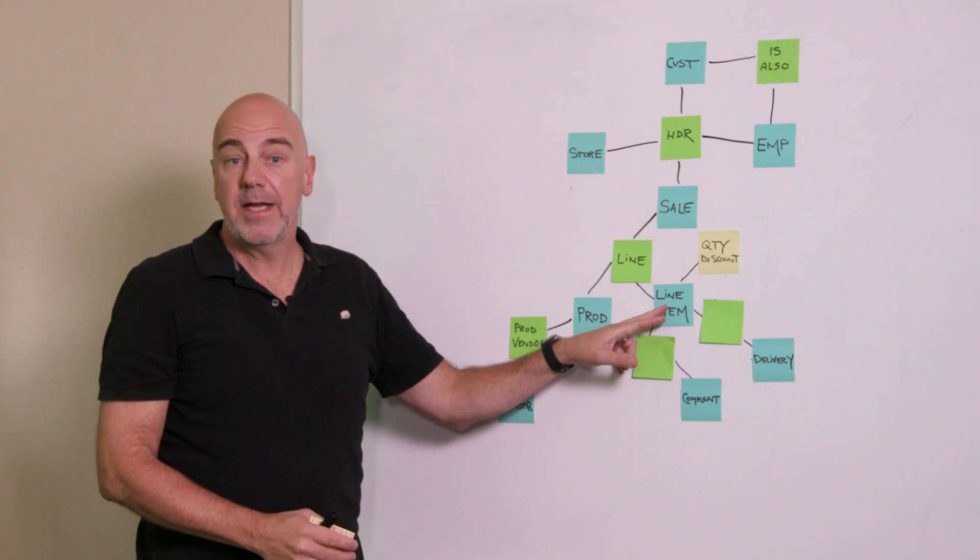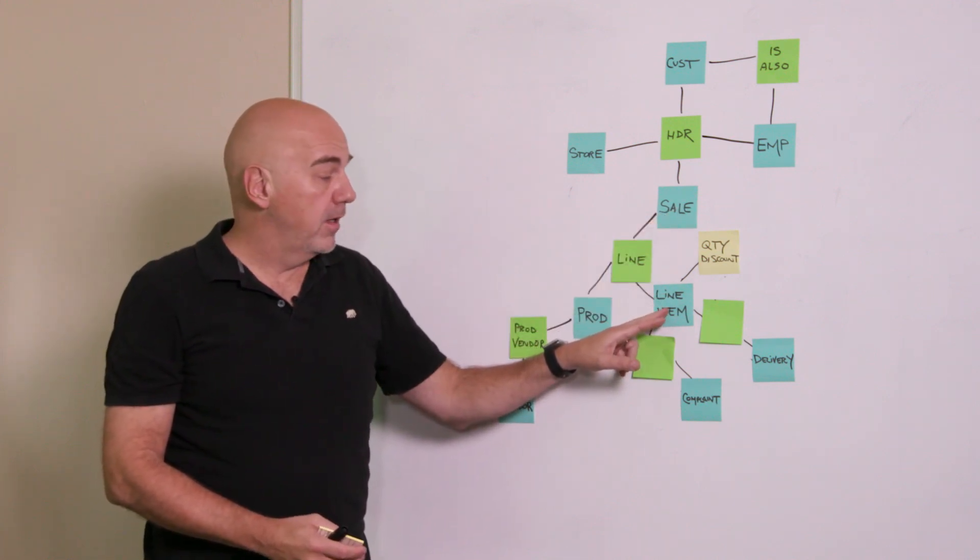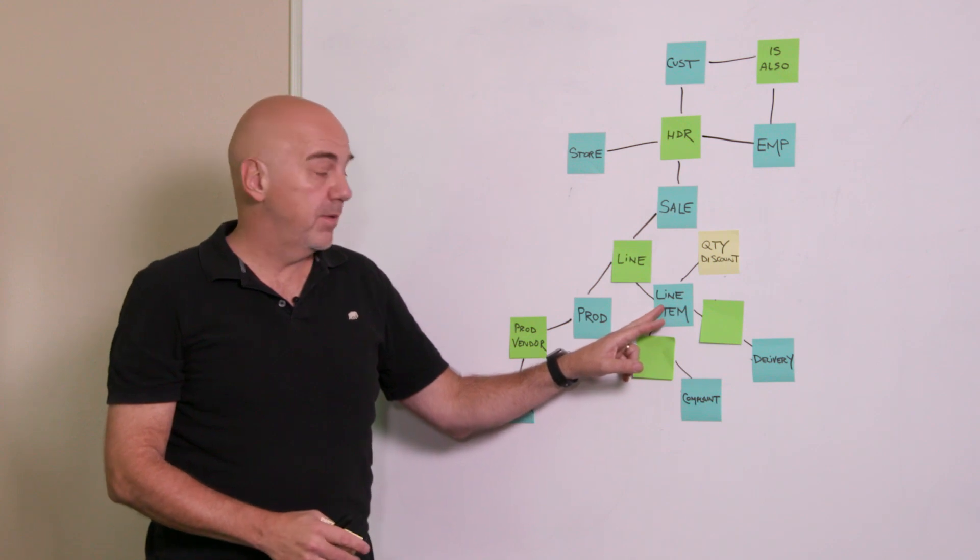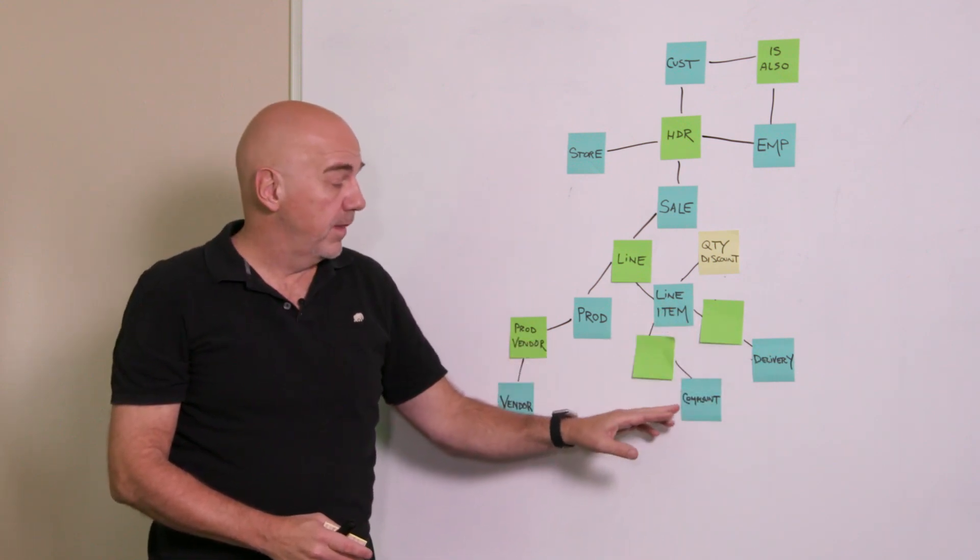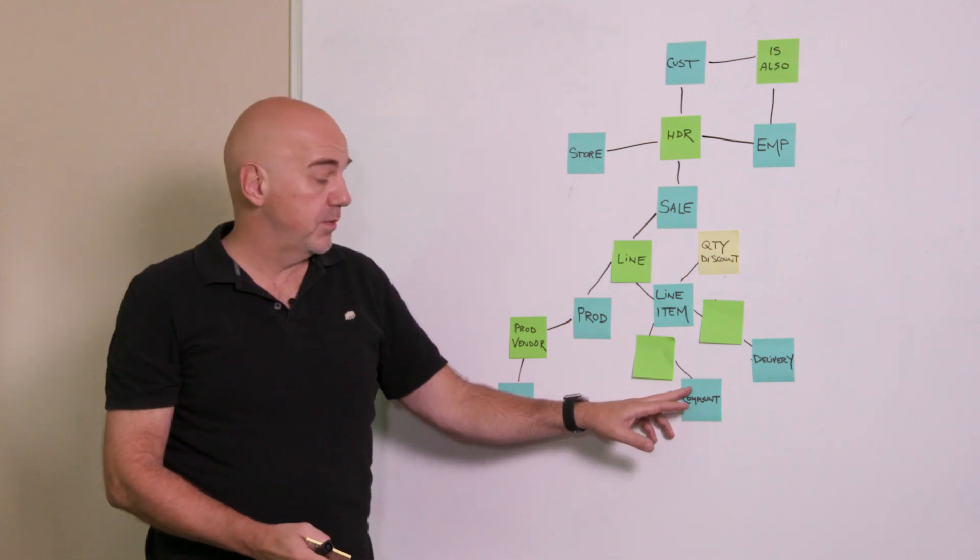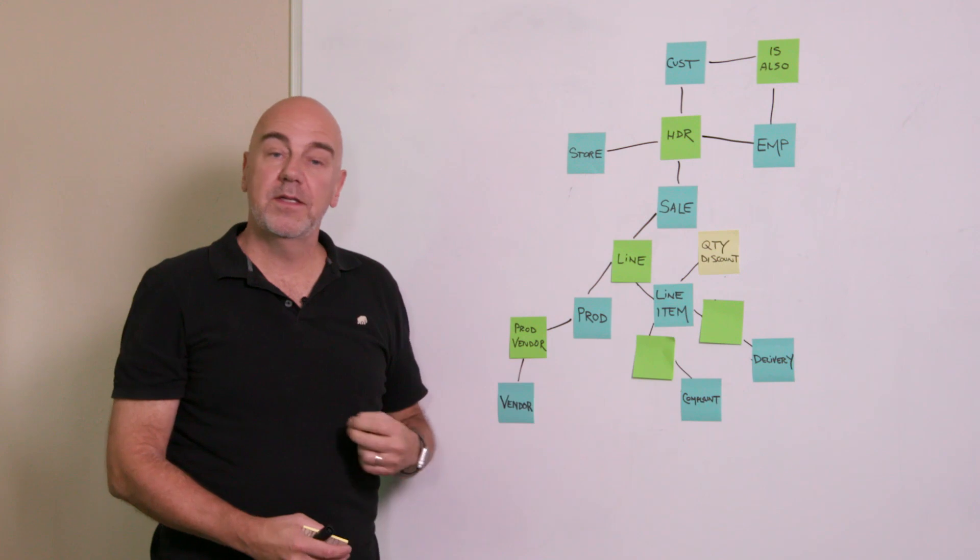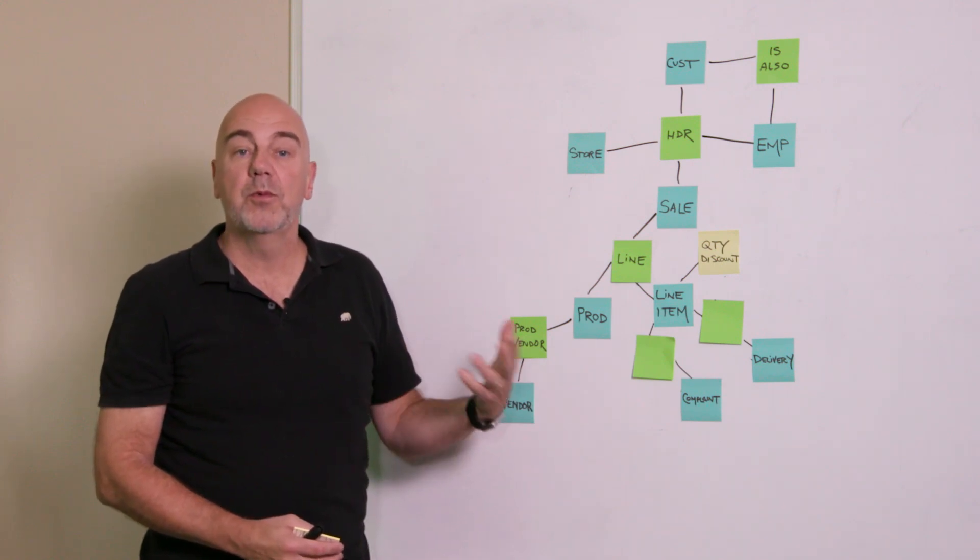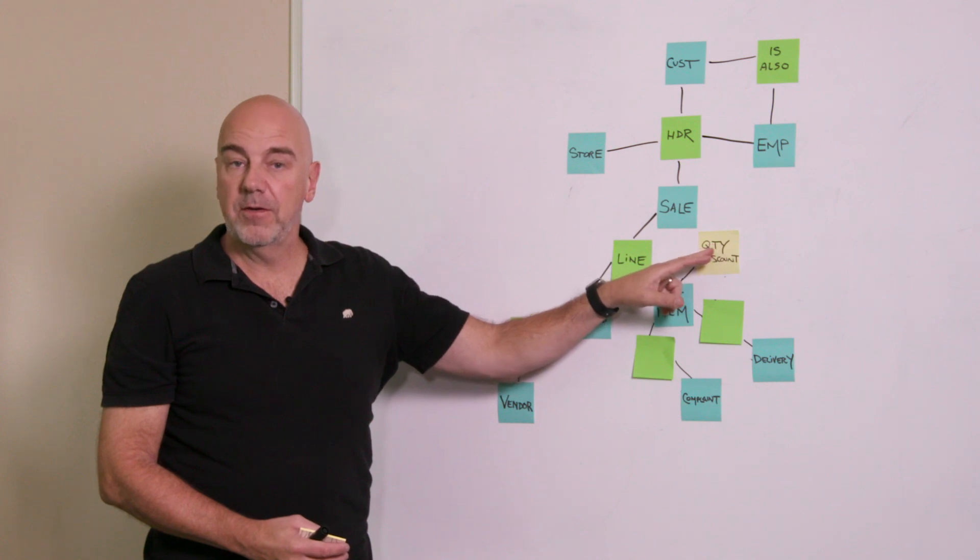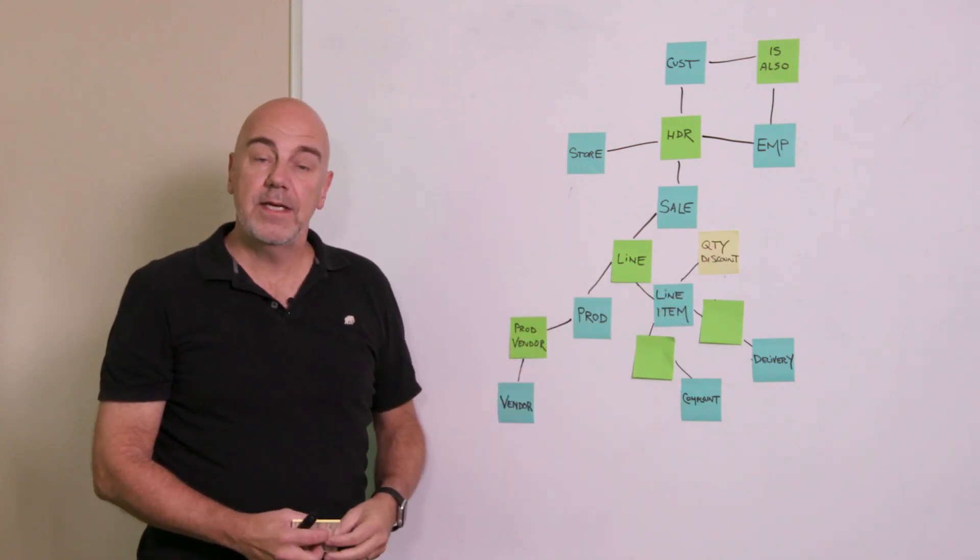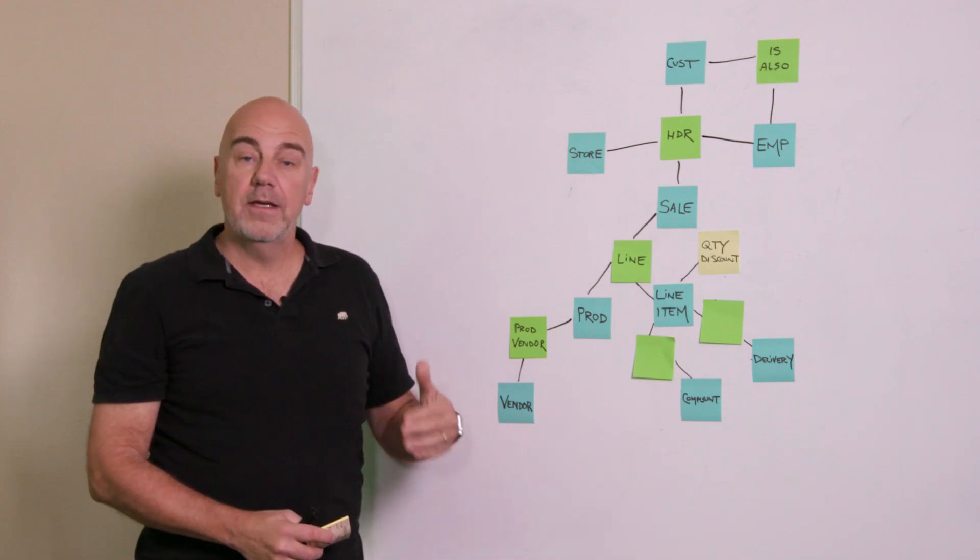This line item now says, I am one of those products on the sale. And oh, by the way, now, if this one item that I am on the sale needs to be delivered, here's a hub link hub relationship. If there's a complaint about one of those items, it goes directly into the line item. And if I need to describe it because it had a quantity, there's three Cokes that were purchased, not one, or I gave you a discount, that now is describing the instance of one of those records in the link, again, a keyed instance.